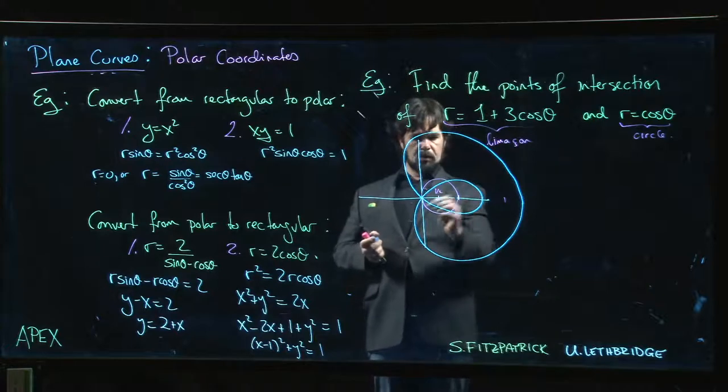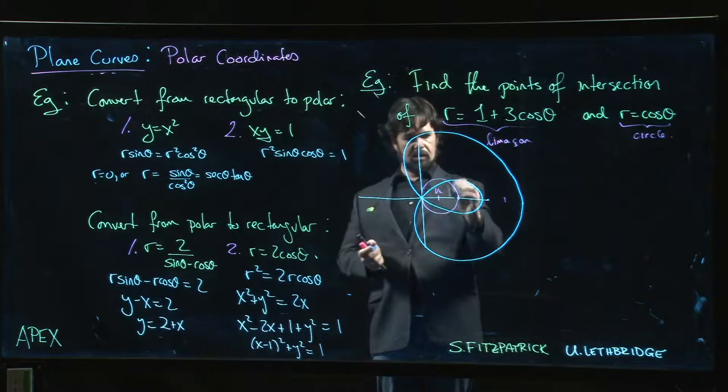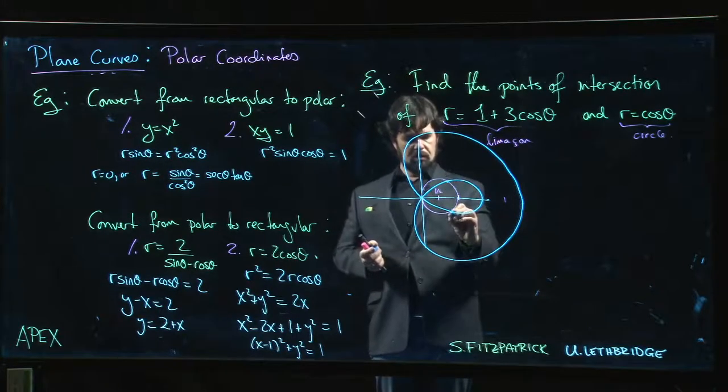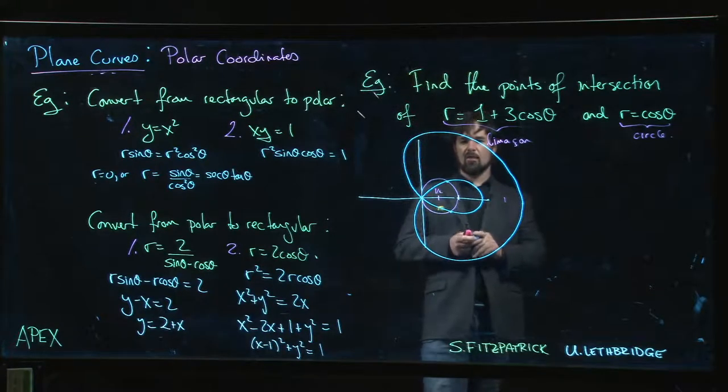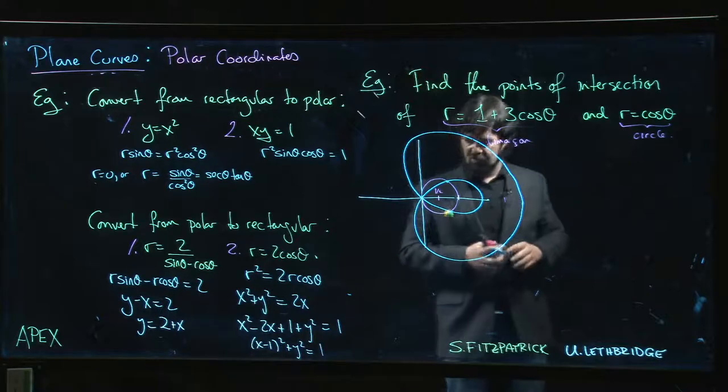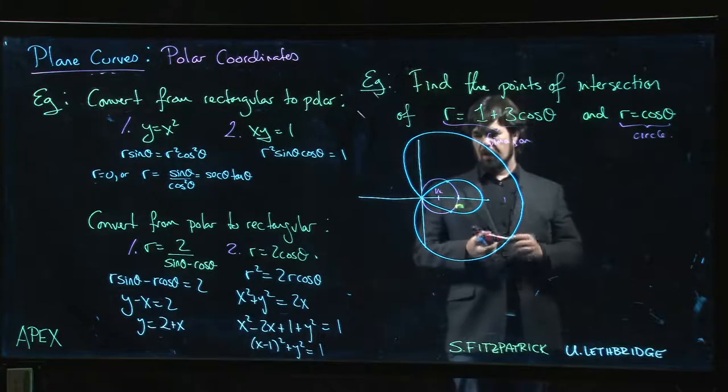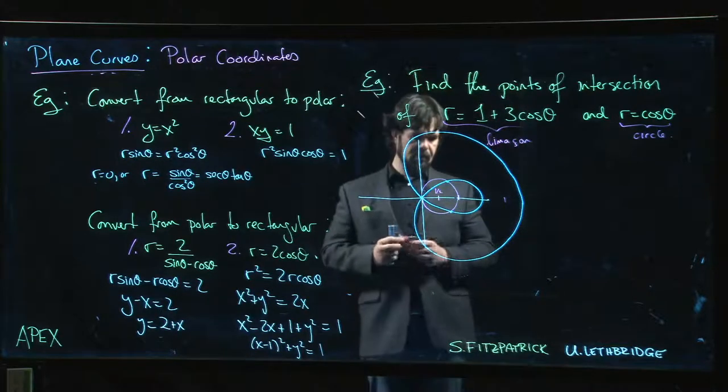I think I've drawn that loop correctly—it does not completely enclose the circle. You can see from the picture there should be three points of intersection. How do you find them? At those points of intersection...